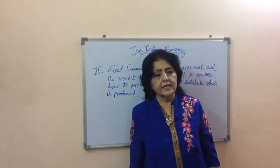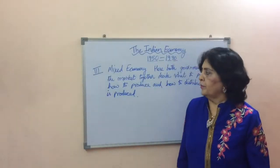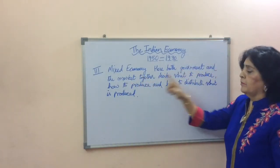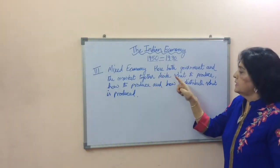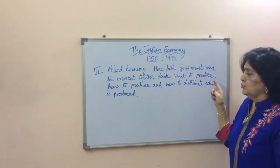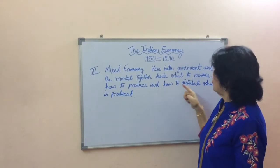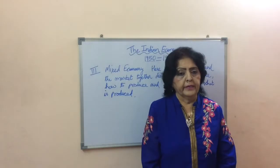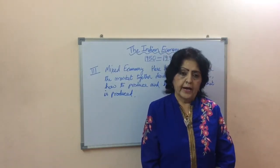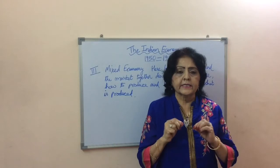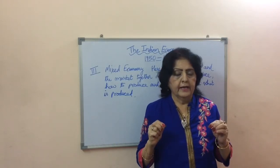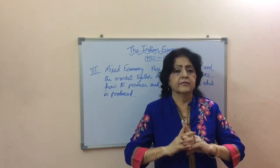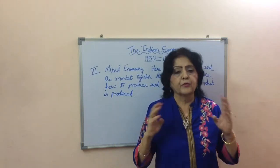The third type is the mixed economy. In a mixed economy, both the government and the market together decide what to produce, how to produce, and how to distribute what is produced. The market provides goods and services which can be produced well, and the government provides essential goods and services which the market fails to provide.